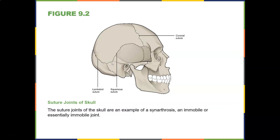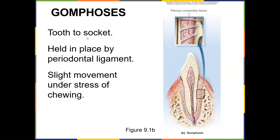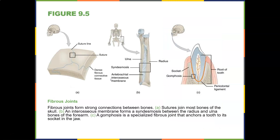Here's the coronal suture, lambdoidal suture, and squamous suture — they essentially don't move. Gomphosis is the tooth-to-socket, held in place by a periodontal ligament. There's slight movement under the stress of chewing, but teeth really shouldn't move too much. Fibrous joints form strong connections between bones. Sutures join most bones of the skull, and an interosseous membrane forms a syndesmosis between the radius and ulna — you can also find one between the tibia and fibula. A gomphosis is a specialized fibrous joint that anchors a tooth to its socket in the jaw.